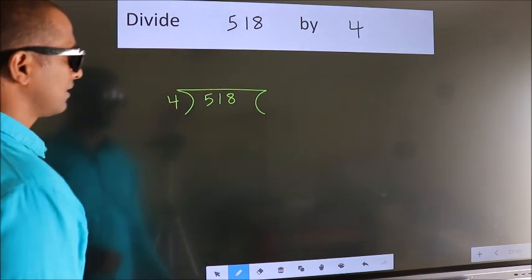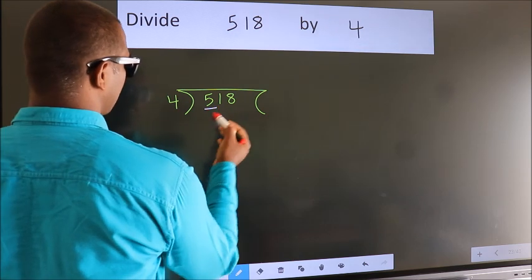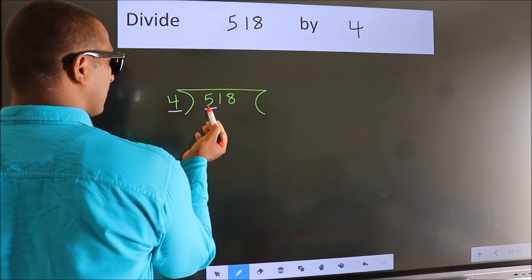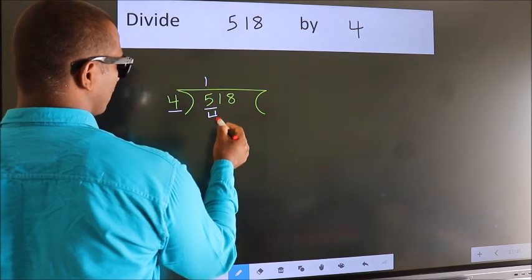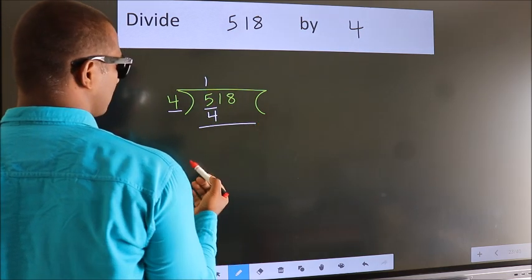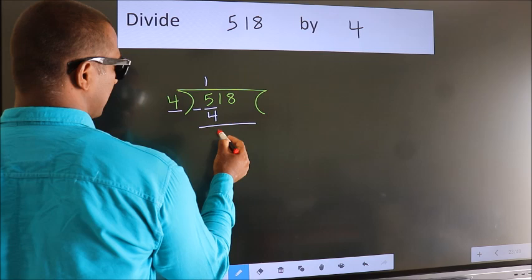Next. Here we have 5, here 4. A number close to 5 in 4 table is 4 once 4. Now, we should subtract. We get 1.